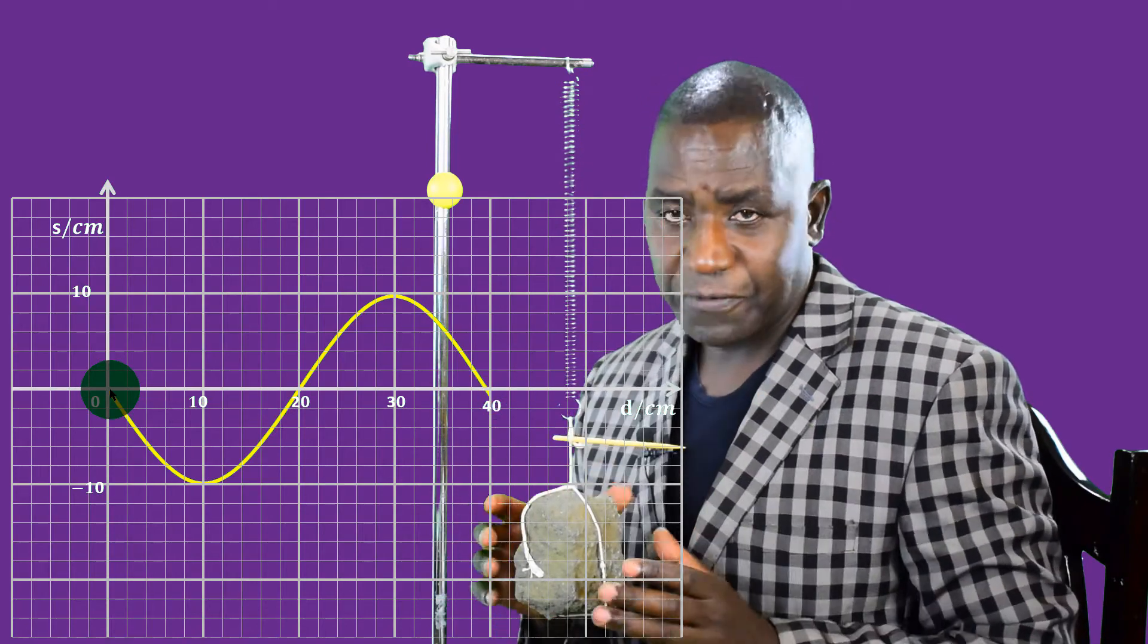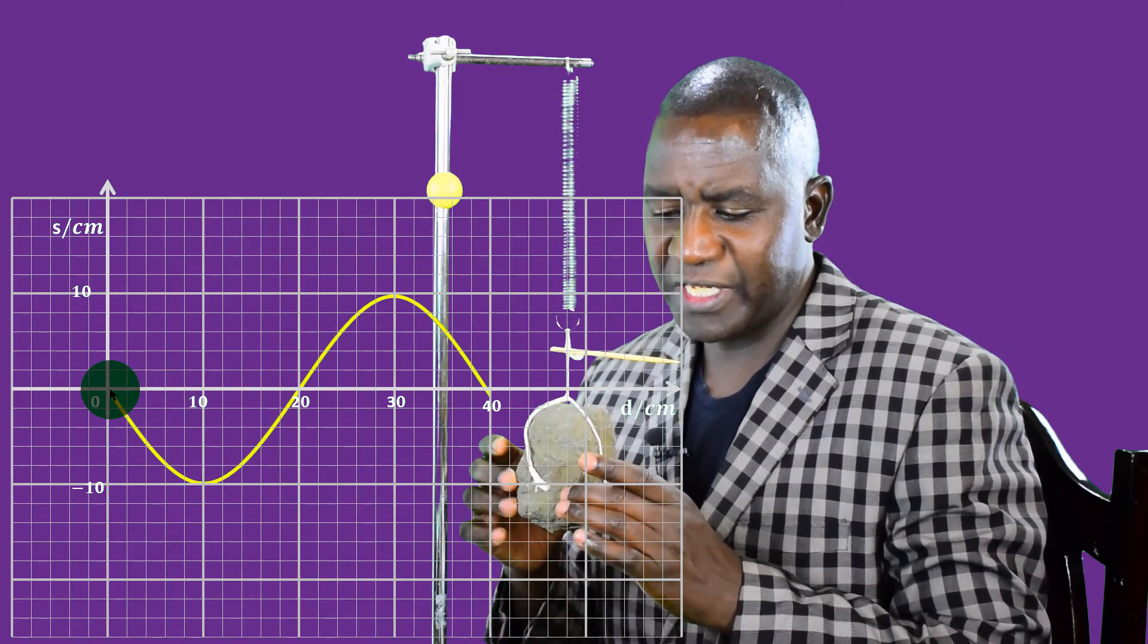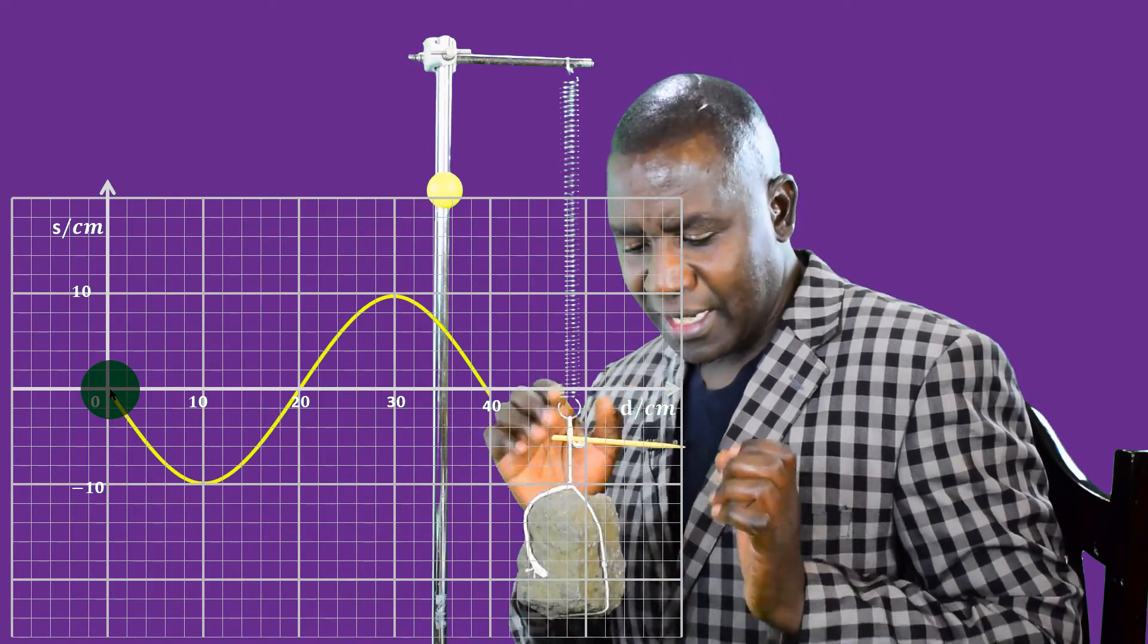And that is how I can get a displacement distance graph. The physical quantity which I want to be careful about here is this. Let's start from this position. We move minus 10, 0, positive 10, 0. The mass has made a complete oscillation.